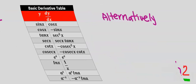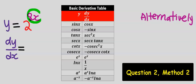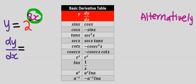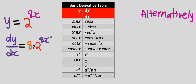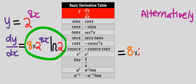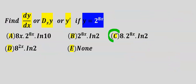Alternatively, using the shortcut method: differentiate 8x to get 8. Recopy back the given question, then multiply by the natural log of that constant. This is our dy/dx, which is the same result. From the options, our answer is C.